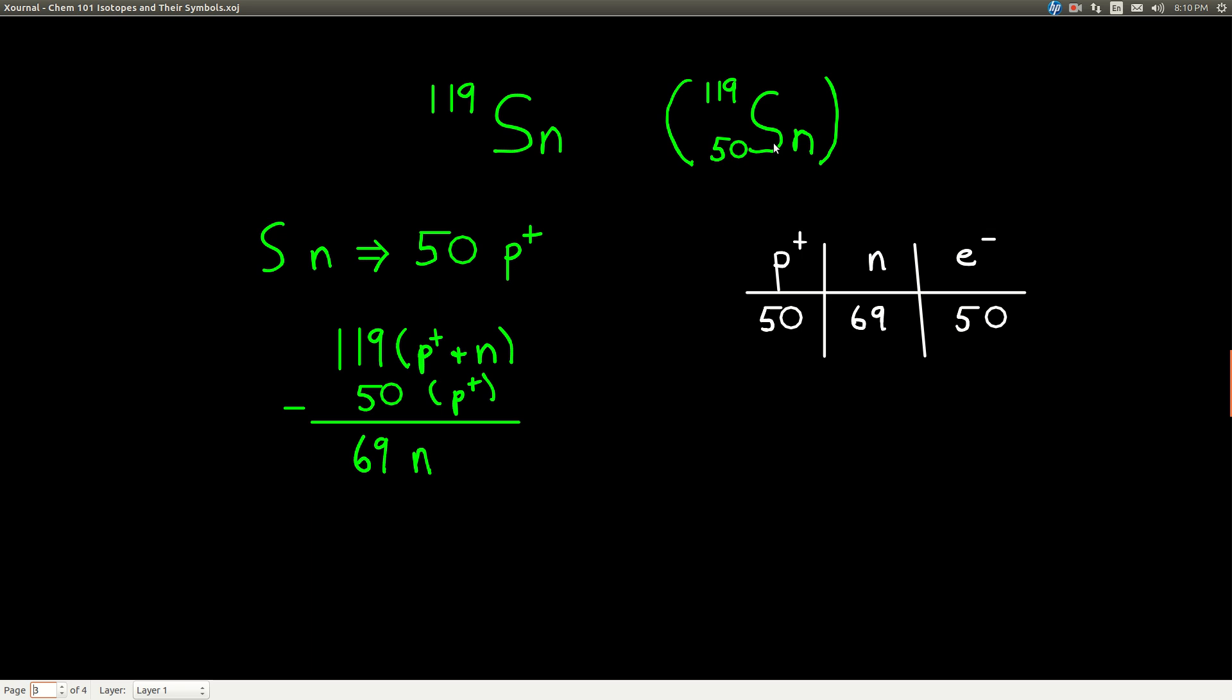If we're not given the symbol in this form where the atomic number is already written, we don't need that. All you have to do is look on the periodic table, look up tin, and that'll tell us there's 50 protons.